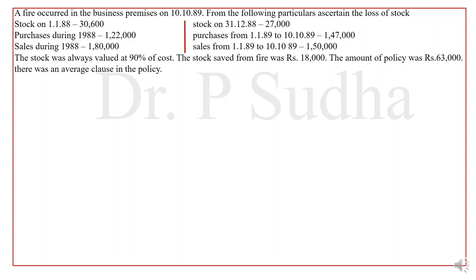This is the question. A fire occurred in the business premises on 10-10-89. From the following particulars, ascertain the loss of stock. Stock on 1-1-88 is 30,600. Purchases during 1988 is 1,22,000. Sales during 1988 is 1,80,000. Stock on 31-12-88 is 27,000. Purchases from 1-1-89 to 10-10-89 is 1,47,000. Sales from 1-1-89 to 10-10-89 is 1,50,000. The stock was always valued at 90% of cost. The stock saved from fire was 18,000. The amount of policy was 63,000, and there was an average clause in the policy. So, with this information we have to calculate the amount of claim.